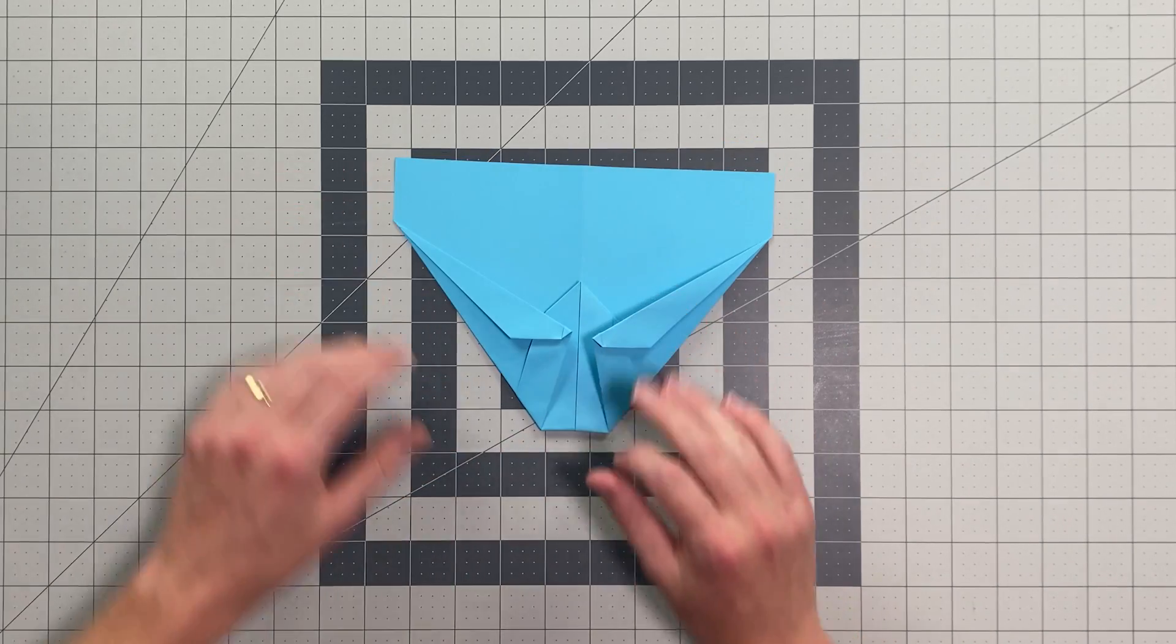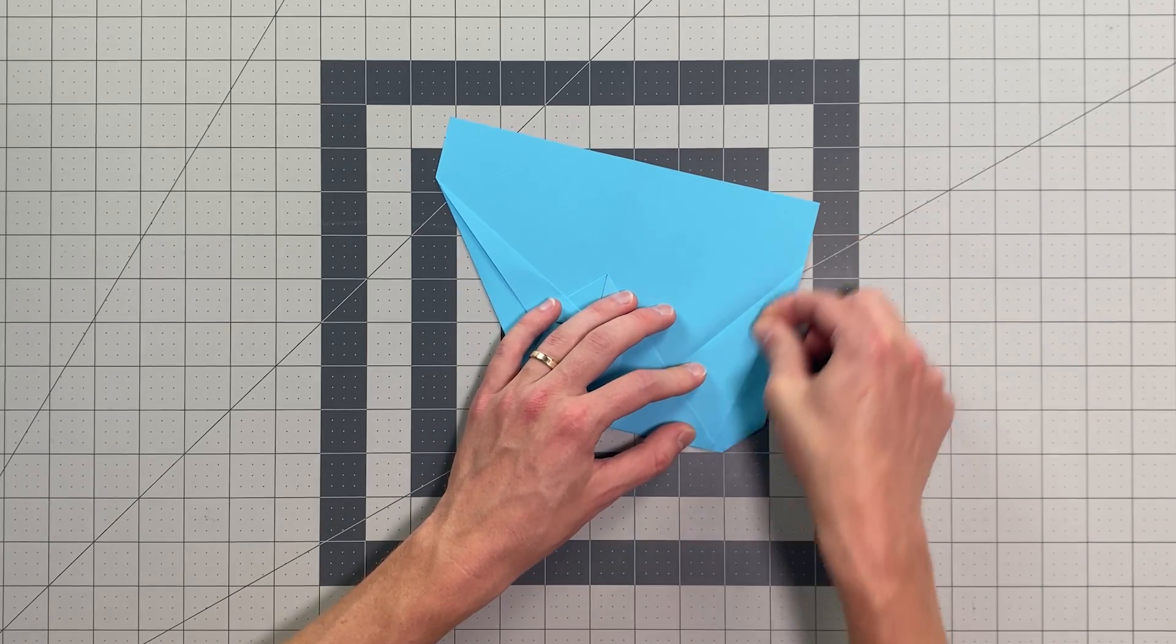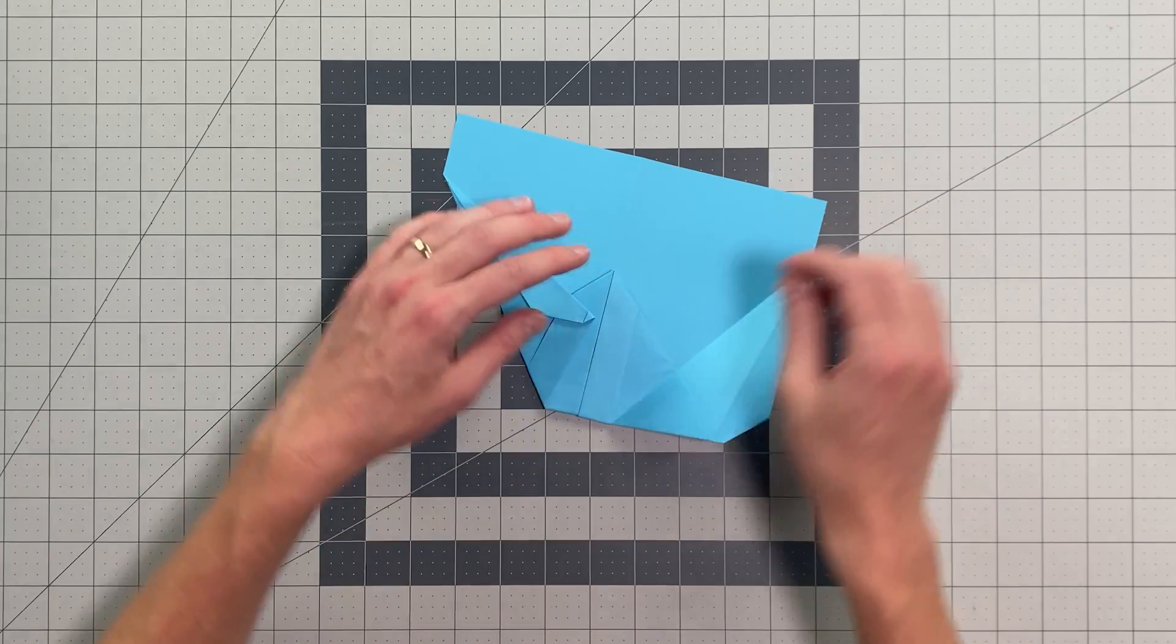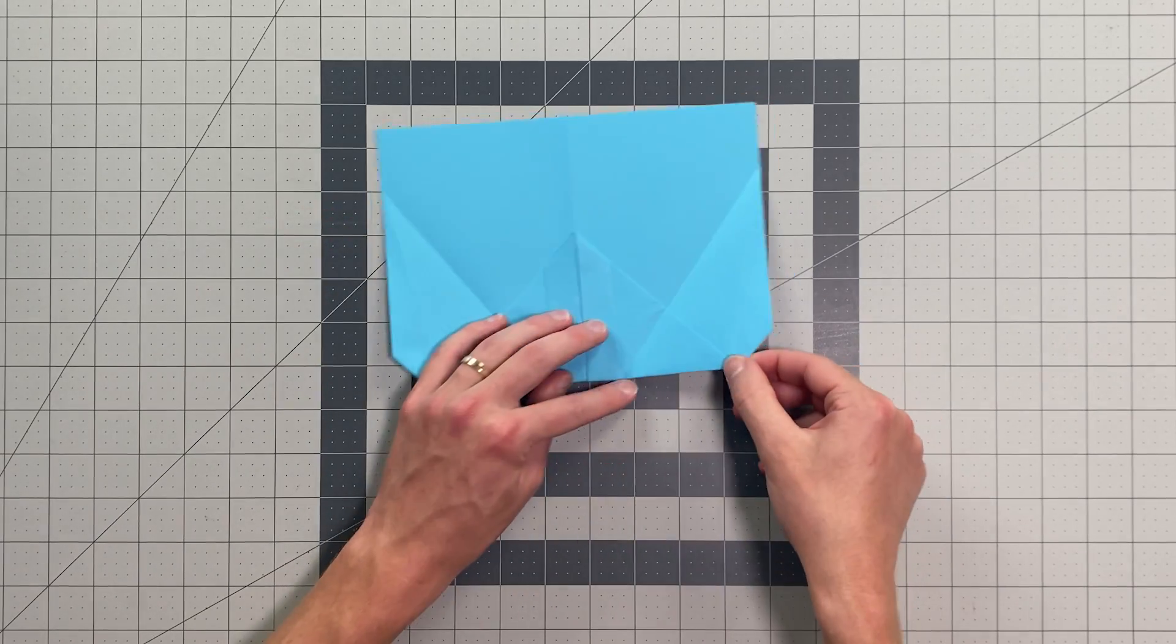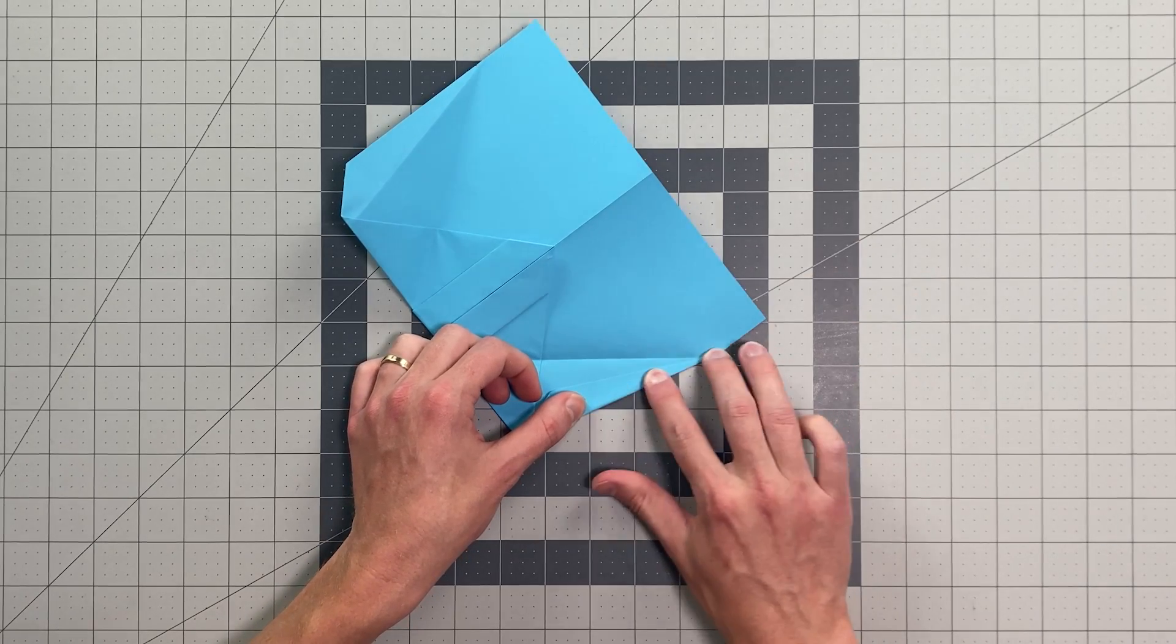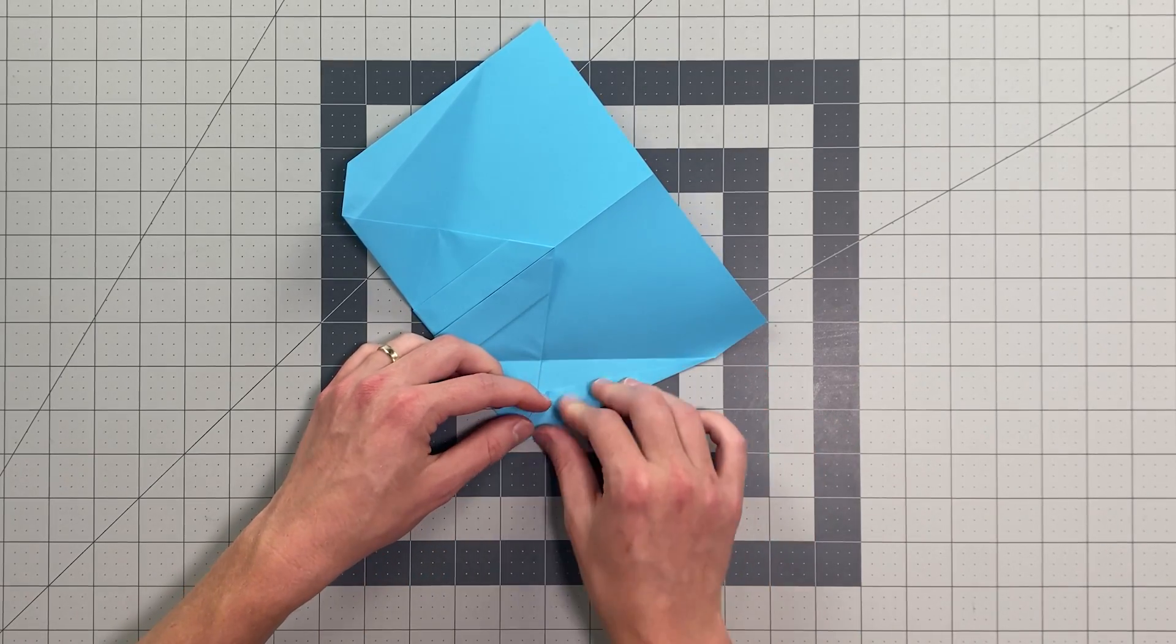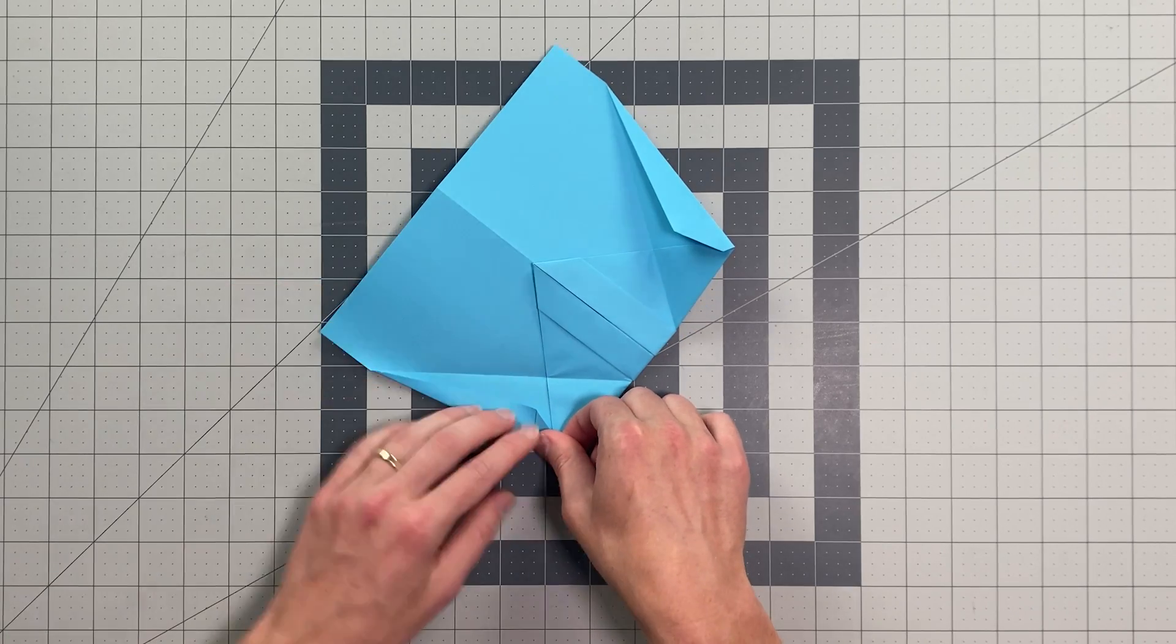And now we'll go ahead and open up back into this position here. I like to kind of rub these creases with my fingernails to help flatten them, because now we're actually going to fold those creases we just made in the opposite direction. Just like that. And just like that.